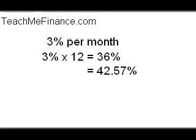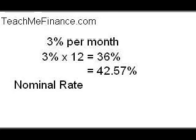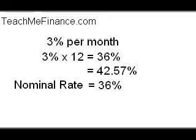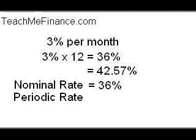You're going to have to learn about three different kinds of interest rates. The first is the nominal rate. Nominal means in name only. The nominal rate is sometimes called the quoted rate. In this case, the nominal rate is 36%. The periodic rate is the amount of interest that you are charged each period.